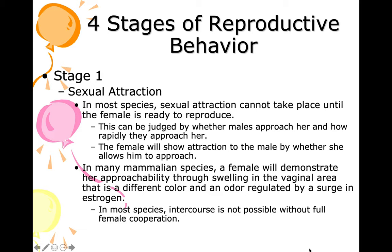The female dog will attack the male dog and chase him away, though he doesn't go very far. As soon as she's ready to reproduce, she will allow him to approach. In many mammalian species, the female demonstrates her approachability through swelling in the vaginal area of a different color and odor regulated by a surge in estrogen — the pheromone. In most species, intercourse is not possible without full female cooperation.